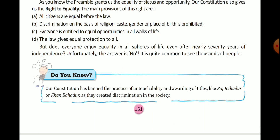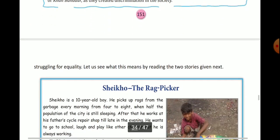But does everyone enjoy equality in all spheres of life even after nearly 70 years of independence? Unfortunately, the answer in our country is no. There are thousands of people who cannot enjoy equality and are not treated equally. Our constitution has banned the practice of untouchability and the awarding of titles like Rai Bahadur or Khan Bahadur, which created discrimination in society.